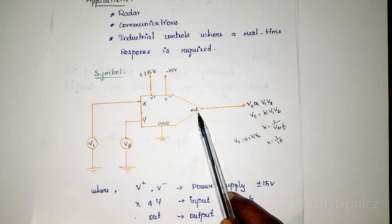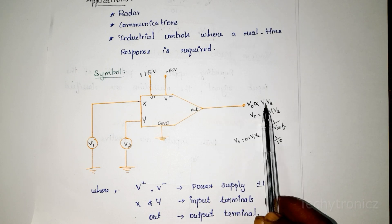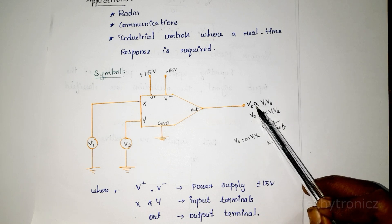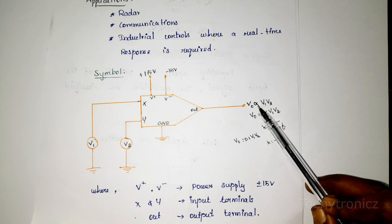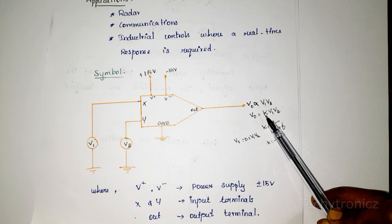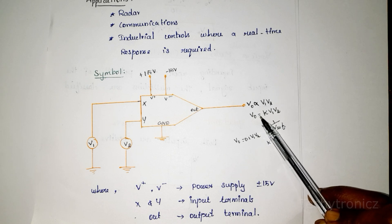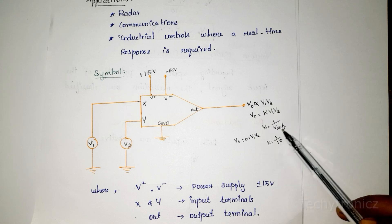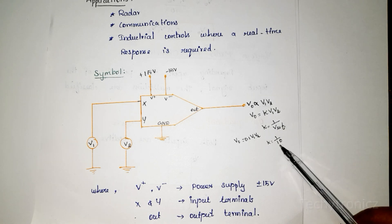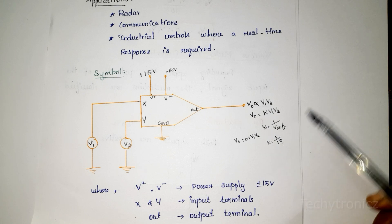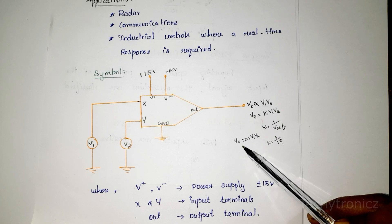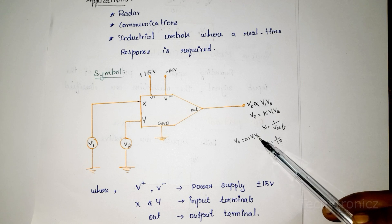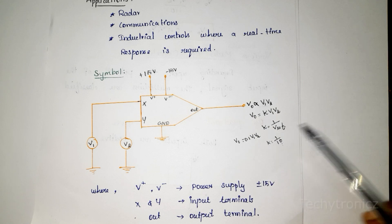The output for analog multiplier is directly proportional to the product of V1 and V2. Removing the proportional symbol, we introduce a proportionality constant K. So V0 is equal to K into V1 into V2. This K value is 1 divided by V-reference, where V-reference is 10, so K equals 0.1. Therefore the output voltage V0 = 0.1 × V1 × V2.